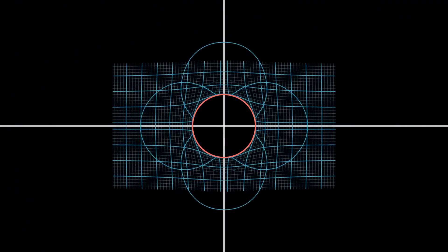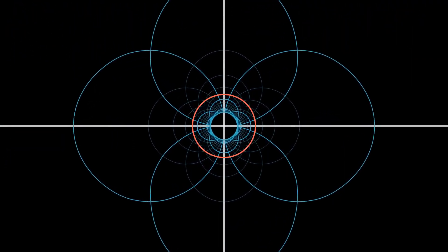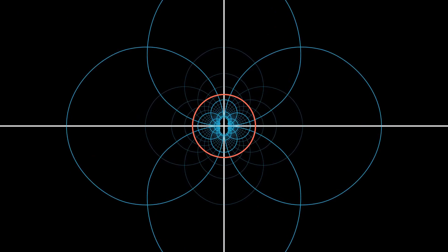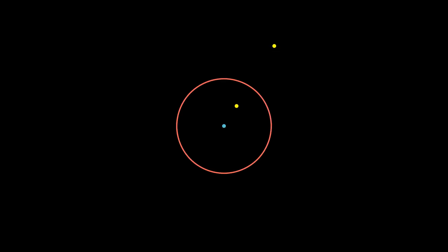Inversion turns the plane inside out — it sends points inside the circle to outside the circle, and sends points outside the circle to inside the circle. If a point is close to the center of the circle, its inversion is further from the center. The further a point is from the center, the closer its inversion is to the center. The center itself gets mapped to what we call the point at infinity.